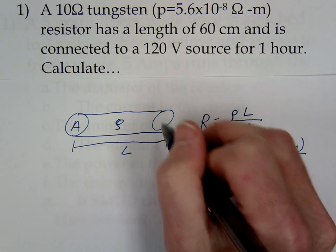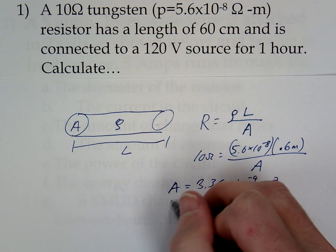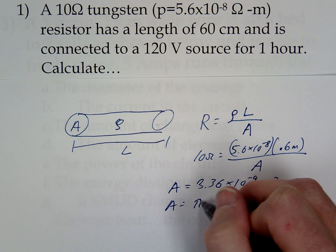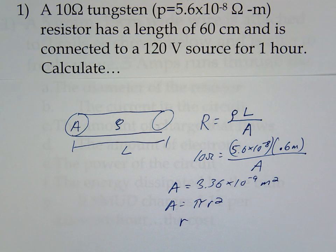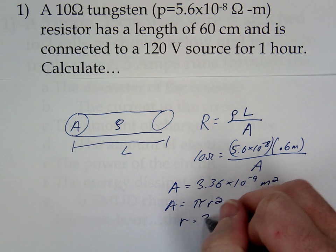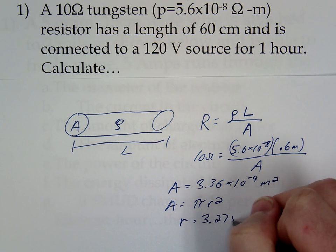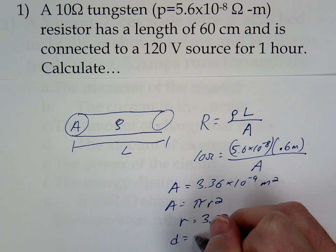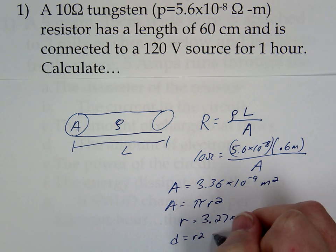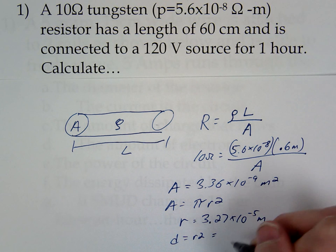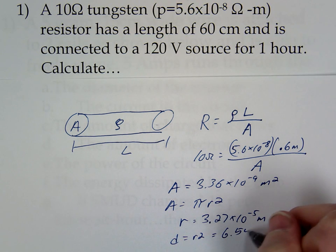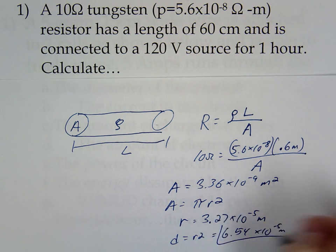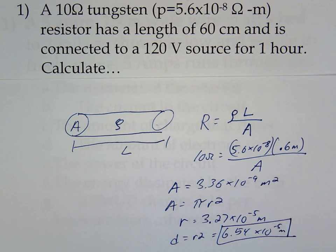So this is a circle. What's the equation for area of a circle? Pi R squared. Solve for your radius. 3.27 times 10 to the negative 5. And then how do we get the diameter? It's at 6.54.